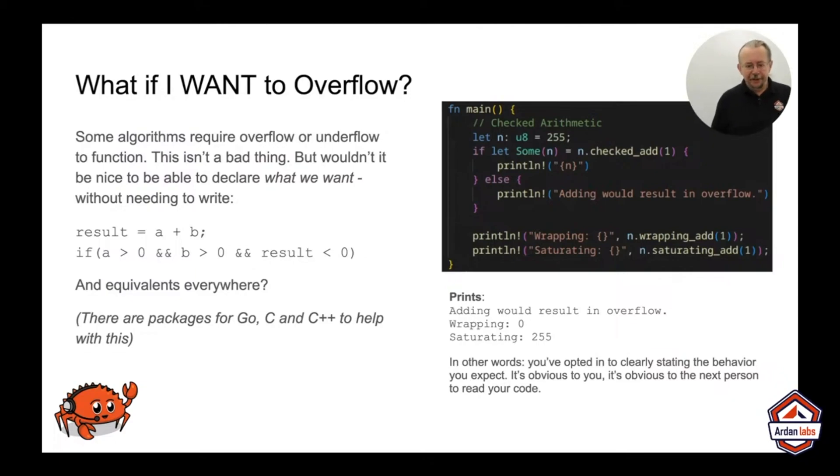What you could do is write the code we have there on the left, result is a plus b, if a is greater than zero and b is greater than zero and result is less than zero, then we know that it didn't wrap. That works in most languages. That's pretty much in line with what happens when you use one of the libraries that adds wrapping support or overflow checks for you. Rust decided that we were all sick of typing those and in the standard library added some checked and saturating arithmetic.